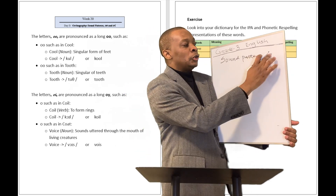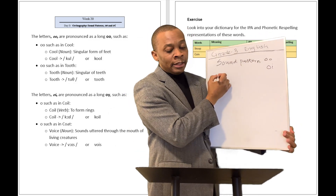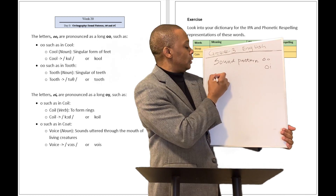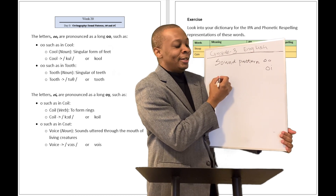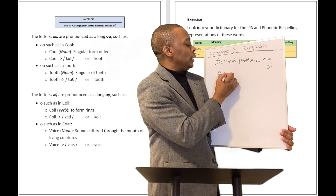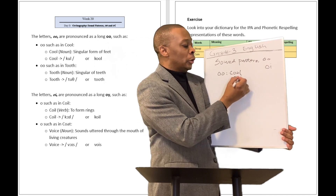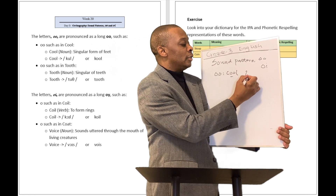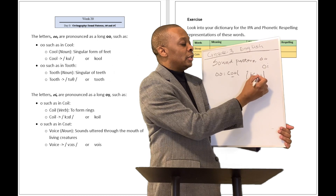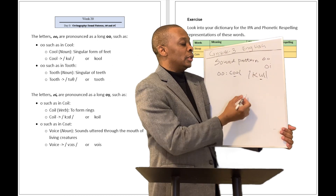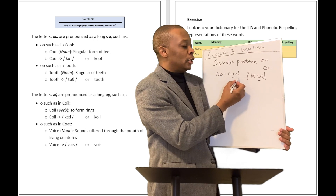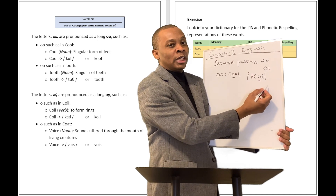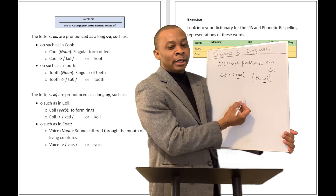So when you see these two letters put together — OO like this — it's going to sound like the long OO sound. So OO is going to be like, for example, the word 'cool' over there. That's going to be OO. I think the IPA representation of it is going to look like that. It's going to be like the OO sound — like the U sound. When you have two O's put together, it sounds like OO.